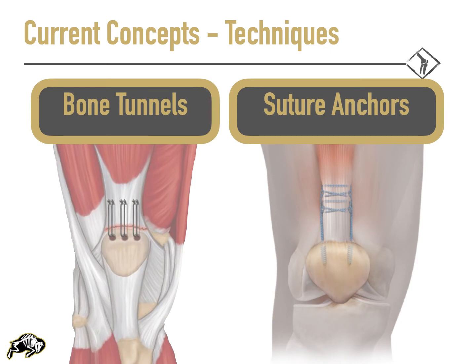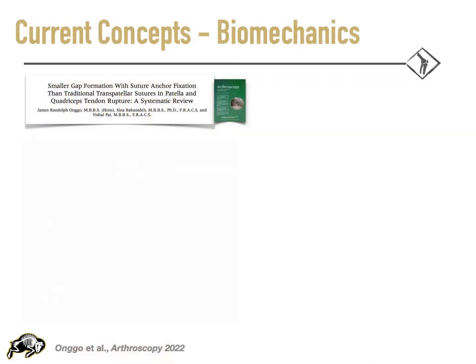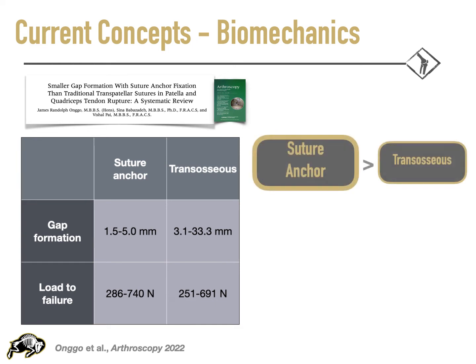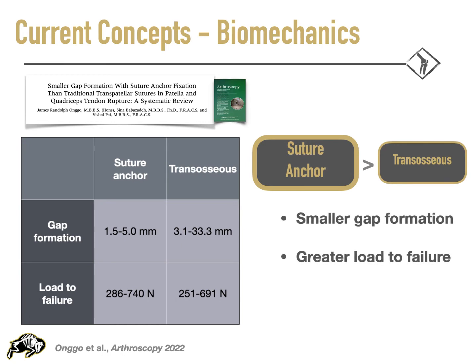Looking at repair techniques, there are really two techniques that are used. On the left, a more traditional trans-osseous tunnel repair, which involves bone tunnels through the patella. And on the right, a newer technique involving repair utilizing suture anchors. Comparing these two techniques biomechanically, Ongoing and colleagues found suture anchors to be superior to trans-osseous tunnels, both with smaller gap formations and significantly greater loads to failure.